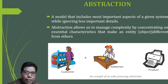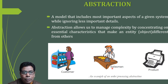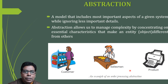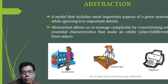Because of abstraction, we are able to separate one object from another. For example, in order processing abstraction, we have the customer — a separate entity — then the salesman, who is involved in selling the product, and we have the product itself. We have different objects and each object is separate from the others. That's why we are able to manage complexity. The customer is interested in buying the product, the salesman is interested in selling it, and the product is the entity which will be sold to the customer.